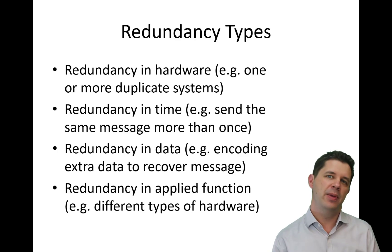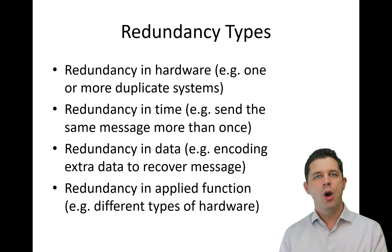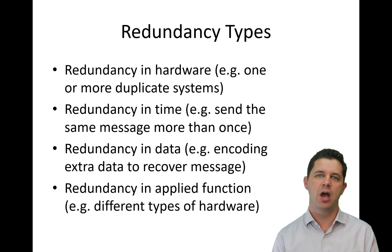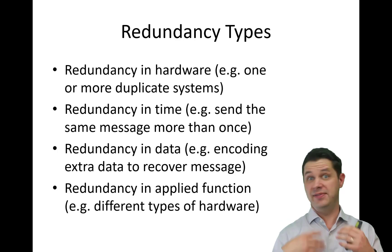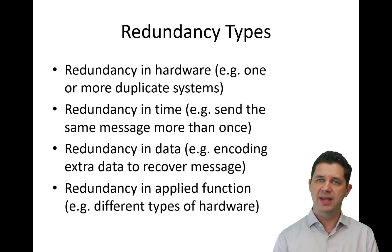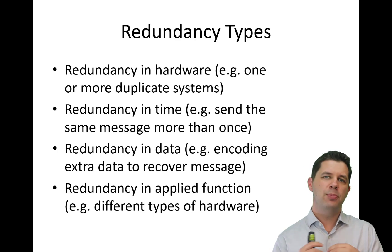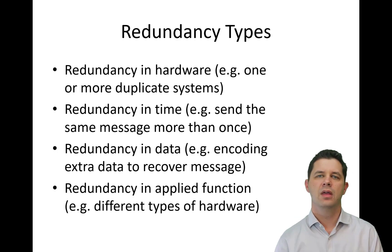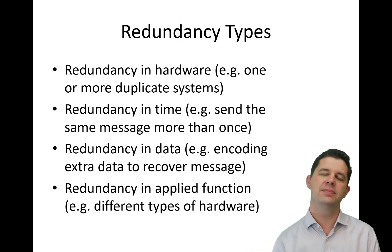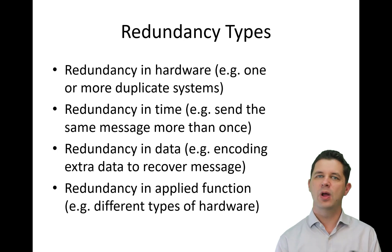There are different ways that redundancy can be implemented. We can have it in hardware, with one or more duplicate systems. We can have it in time — in communications, for example, we send the same message more than once and compare the received messages. We can have it in data by encoding extra data to recover a message, such as error correcting codes and Hamming codes. We can also have it in an applied function, where different types of hardware cover different roles — for example, a braking function that uses normal brakes but also a parachute to slow down a drag car.